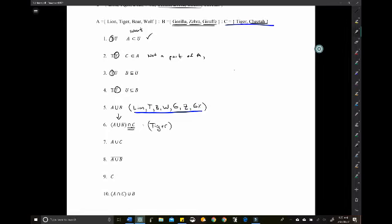A union C. So think about what that means. You're adding, you're combining the two. So now that would be Lion, Tiger, Bear, Wolf, and we're going to add Cheetah. Tigers already included.